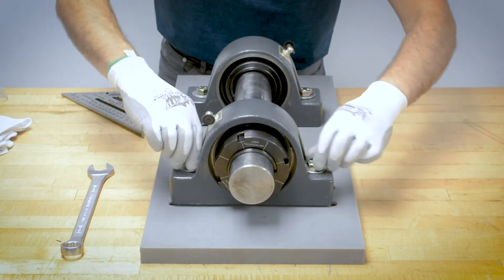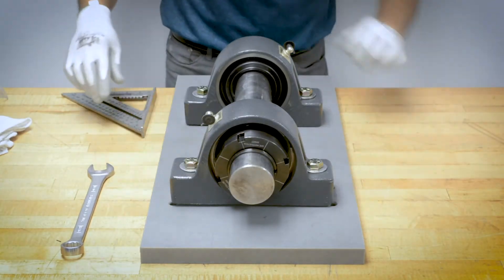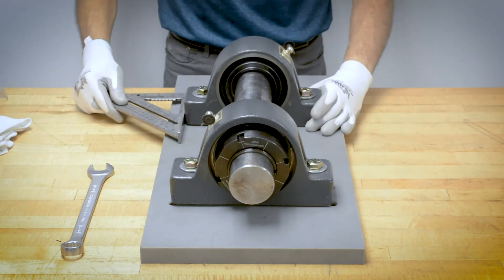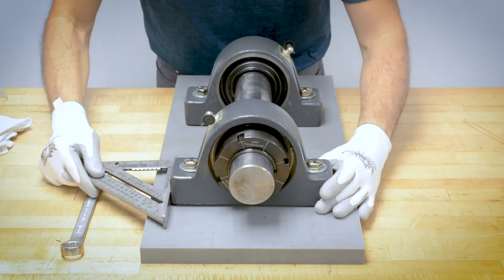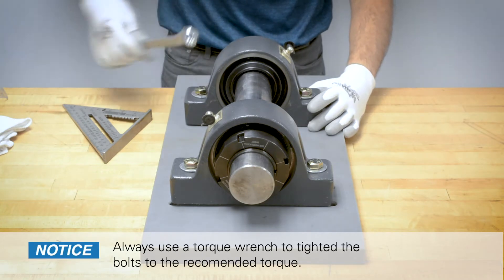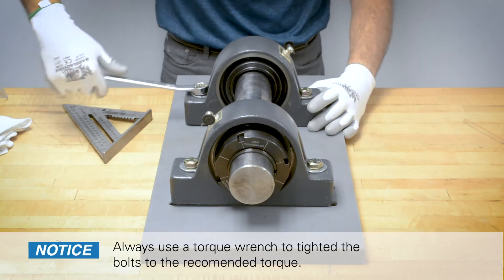Once you have the bearings on the shaft, insert but do not tighten the mounting bolts. Align the bearings to the shaft. Once completed, tighten the housing bolts to the recommended fastener torque.